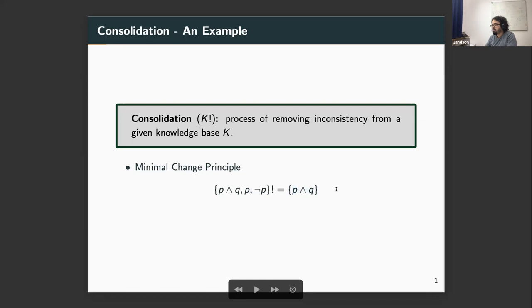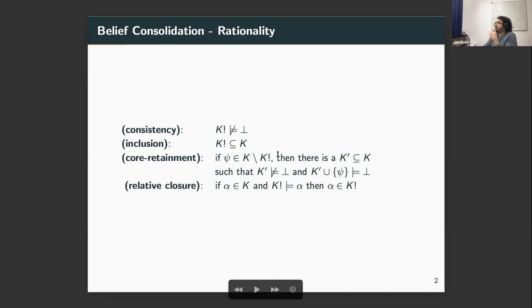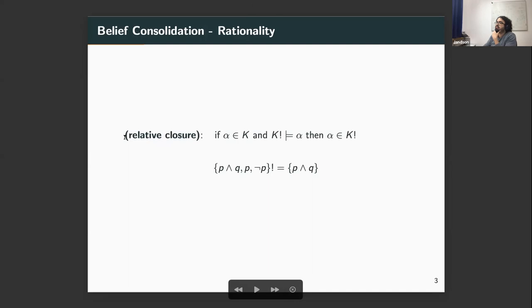But an issue in consolidation is that we do not wish only to remove the inconsistency — we also want to minimally change the knowledge base in order to restore consistency. For this example, the choice I made is not a minimal choice, because I retained the conjunction p and q, from which I still entail the formula p. So if I still believe in p, why have I removed it? We need a minimal change principle to guide consolidation, and this principle is conceptualized by a set of rationalized postulates. To illustrate one of them: relative closure forbids the spurious choice of keeping p and q while removing p.